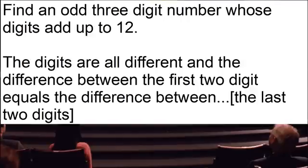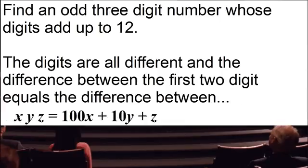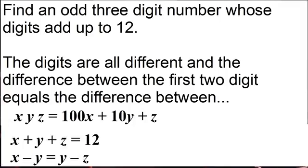The second question is more interesting. Find an odd three-digit number whose digits add up to twelve. So a three-digit number x, y, and z we can think about is a hundred x plus ten y plus z. So if we want to add the sum of the digits that's saying x plus y plus z is equal to twelve.